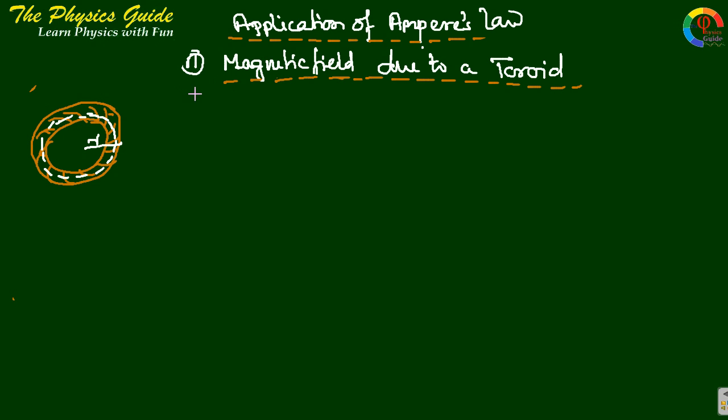This is one application of Ampere's law to find the magnetic field due to a toroid. A toroid is an endless solenoid forming a circular shape. The magnetic field along the toroid or in between the toroid can be measured.